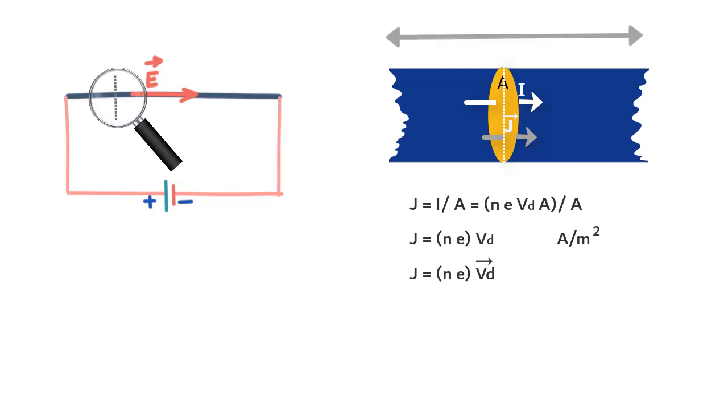But current I is something that flows through an extended object like this wire, and it has the same value at all points across the circuit. But J does not,